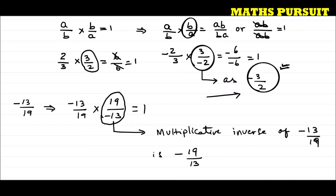We should not say the answer is 19 upon minus 13, because the minus sign should not be in the denominator — it should always be in the numerator. So instead of minus 13 upon 19, we say the multiplicative inverse is minus 19 upon 13. This is straightforward, but we must be careful when dealing with negative signs.